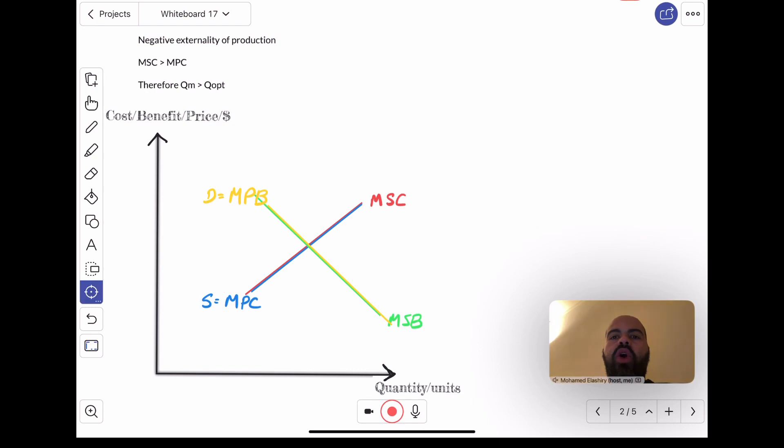the point where they all intersect, the market equilibrium quantity, QM, will be equal to the socially optimum quantity, QOpt. But what if there's a negative externality of production?